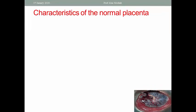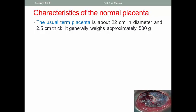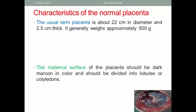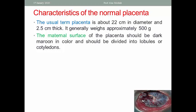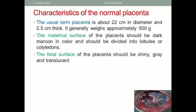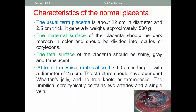The normal placenta is approximately 22 cm in diameter and 2.5 cm thick, weighing approximately 500 grams. The maternal surface should be dark maroon in color and divided into lobules or cotyledons. The fetal surface should be shiny, gray, and translucent. The typical umbilical cord is 60 cm in length with a diameter of 2.5 cm; it should have abundant Wharton's jelly and no true knots or thrombosis. The umbilical cord typically contains two arteries and a single vein.